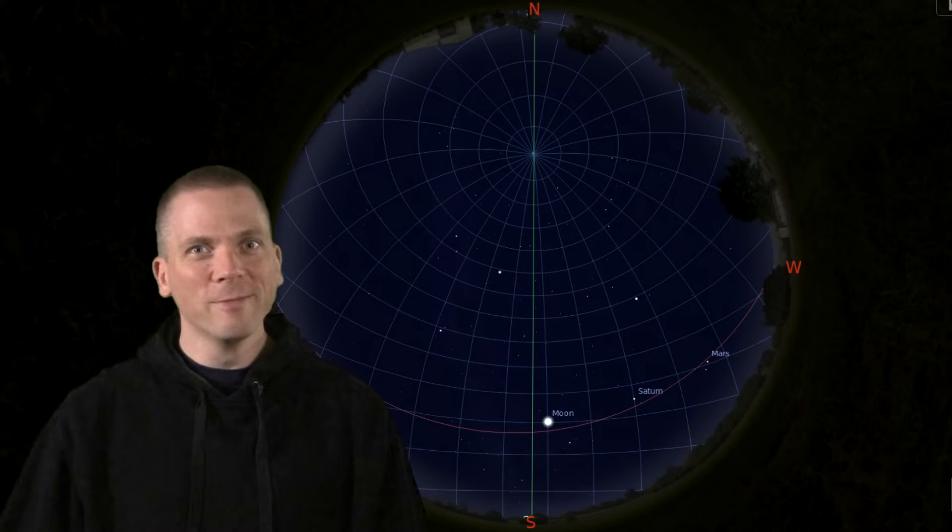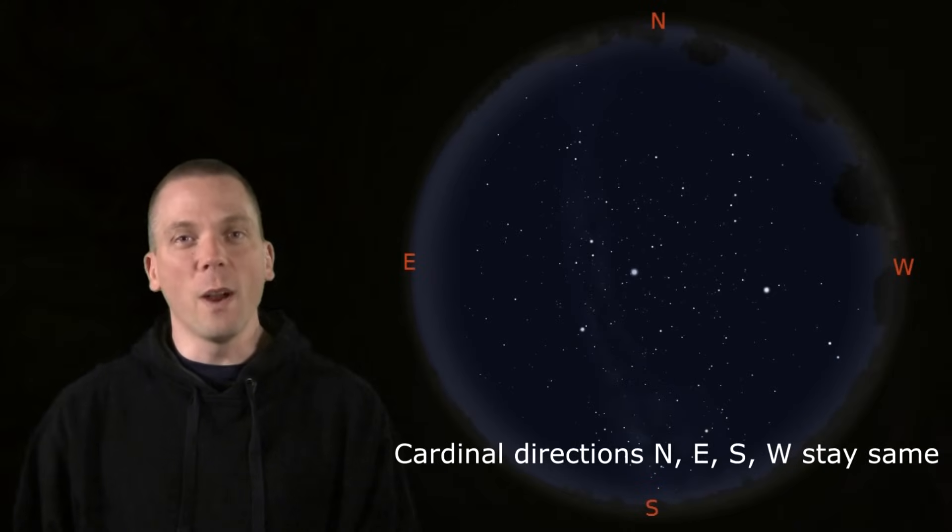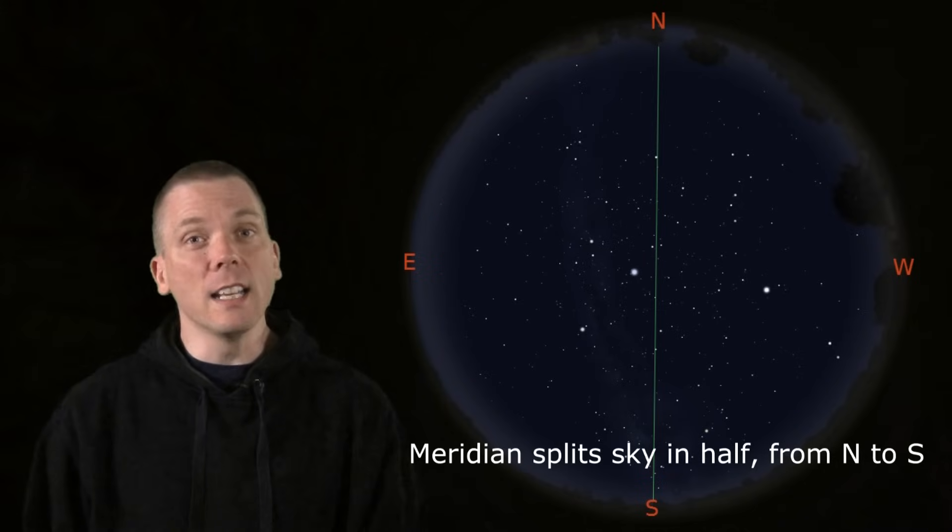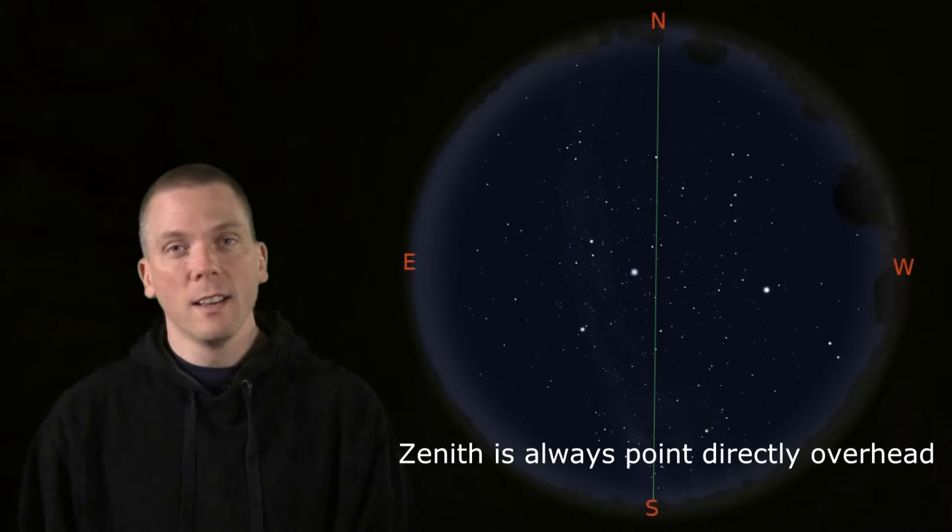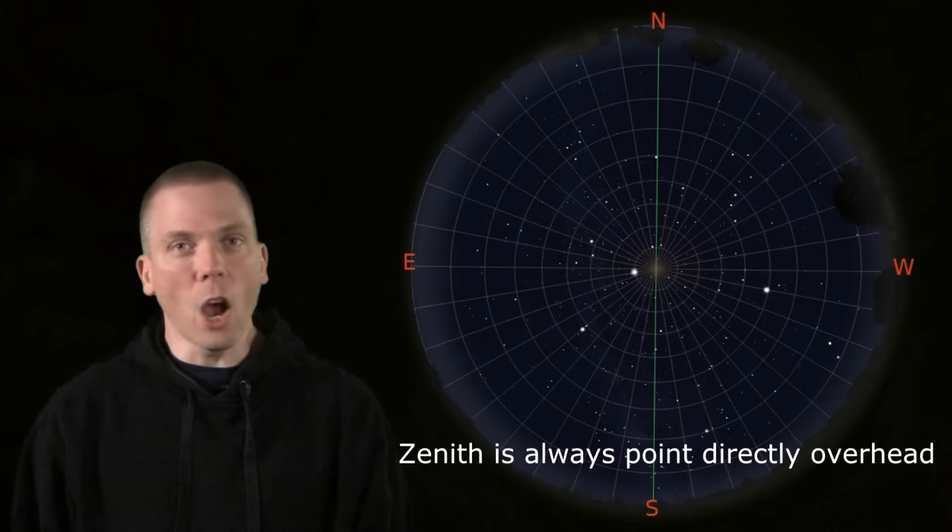With me so far? Great! So let's review these quickly. North, east, south, west never change, of course. The meridian splits the sky in two halves from north to south. The zenith is directly overhead.